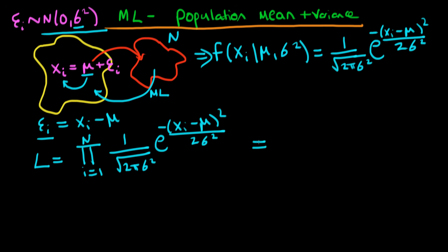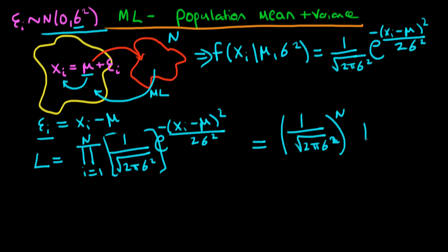We can simplify further by noting that the term (1 over √(2πσ²)) is completely independent of i, so we can take it outside the product. This gives us (1 over √(2πσ²))ⁿ times the product from i equals 1 to n of exp(−(xᵢ − μ)² / 2σ²). That's the likelihood function L.